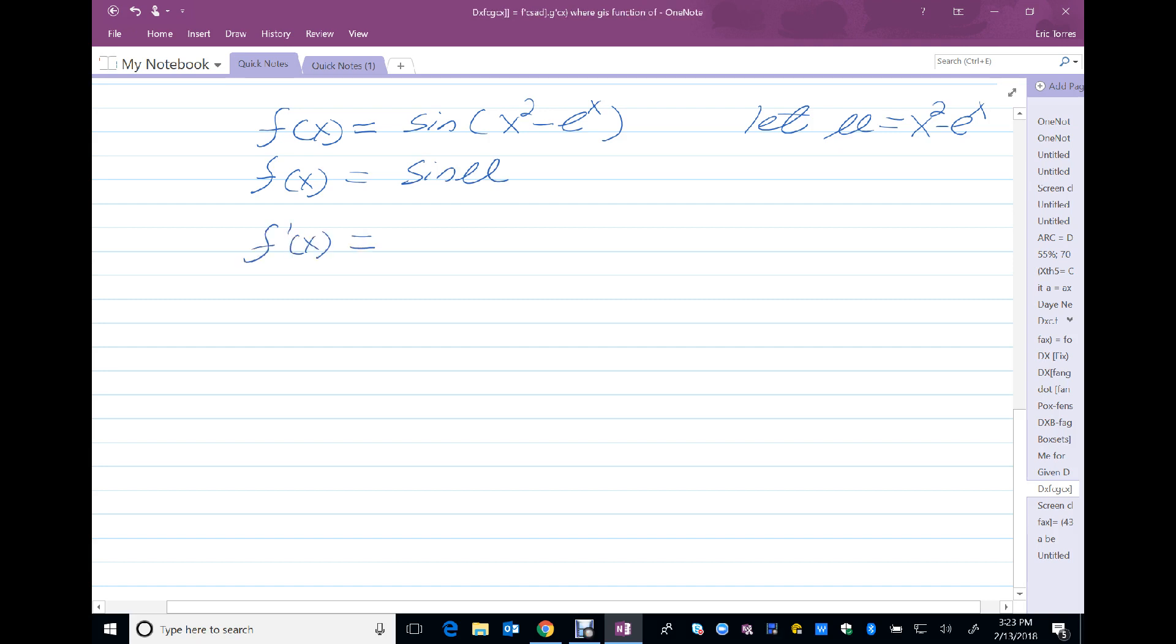So, when I take the derivative of f of x, the derivative of sine, first part, is cosine of u. Second part, du dx. Never forget this second component. And I'm going to get that from my u substitution that I made. Take the derivative, du dx, is 2x minus e to the x.